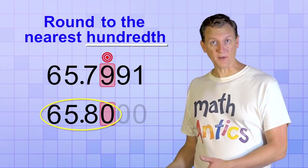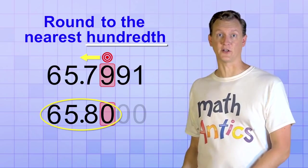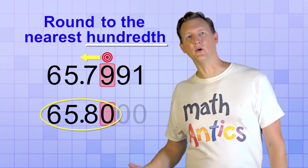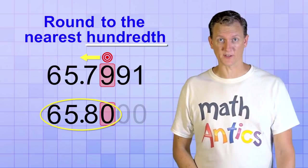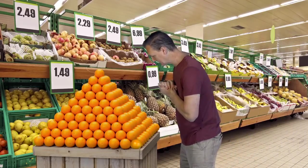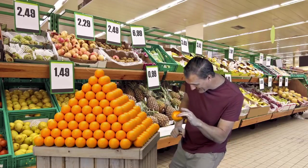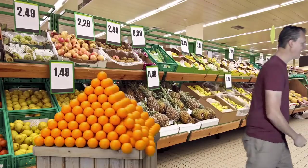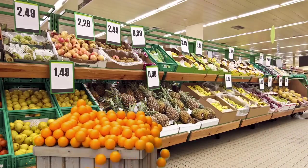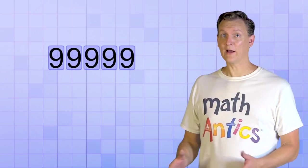As you can see, in some cases, rounding can actually change the digits to the left of the target digit also. It's sort of a domino effect that can happen when rounding numbers. If you have a lot of 9's, rounding can bump them all up like a chain reaction.